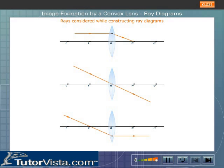To construct a ray diagram we need at least two rays whose paths after refraction from the lens are known. The image is formed at the point where these refracted rays meet. These rays are chosen according to our convenience — any of the two rays shown here can be considered to obtain the image.